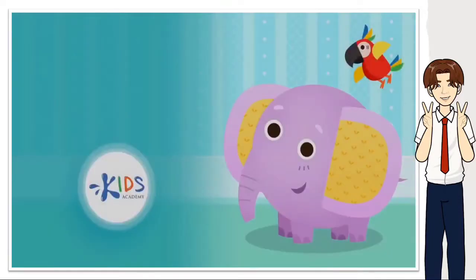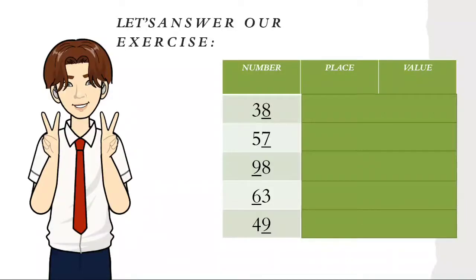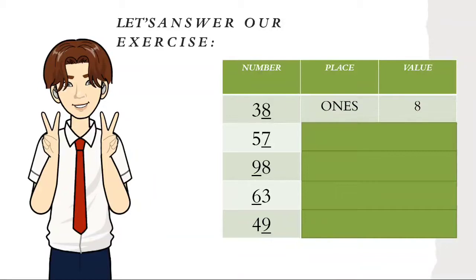Now we are done watching the video clips about place value. Let's proceed to our exercises. As you can see, we have different numbers with an underlined single digit of ones and tens. All we need to do is identify the place and the value. For example, thirty-eight: the place is ones and the value is eight.